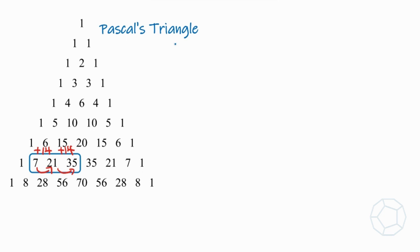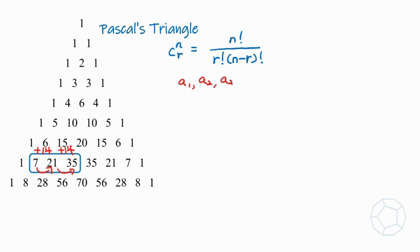To solve the problem we start with the formula of binomial coefficients nCr, which is n factorial over r factorial times n minus r factorial. Next, for an arithmetic sequence a1, a2, and a3, we have the common difference a2 minus a1 equal to a3 minus a2. In other words, we have 2 times a2 equal to a1 plus a3.